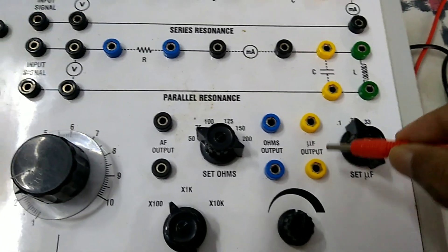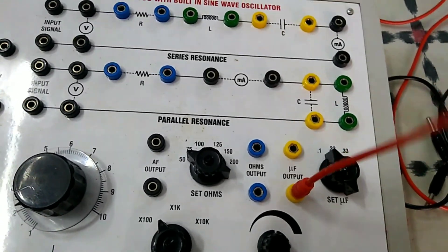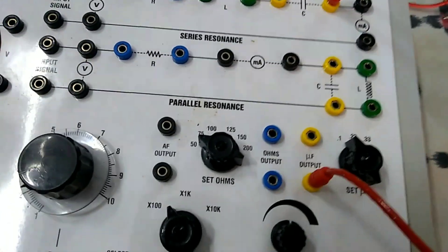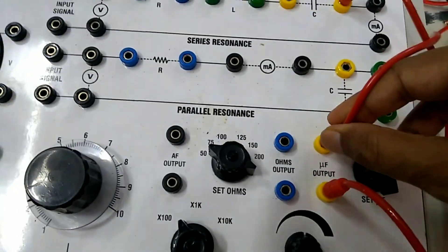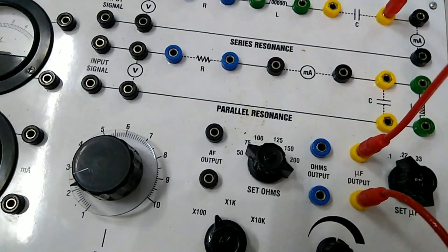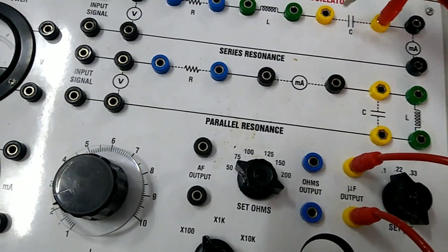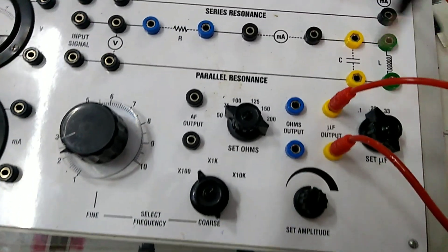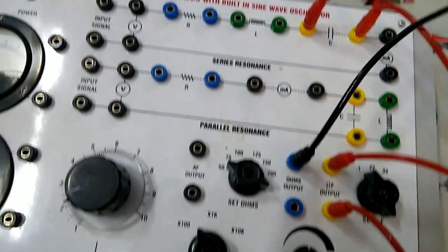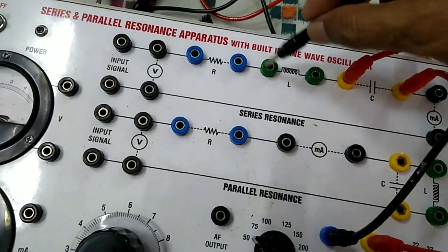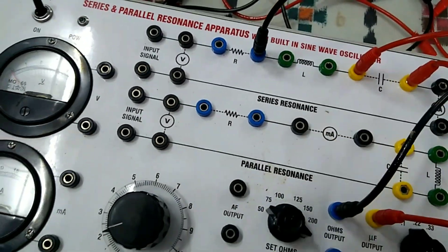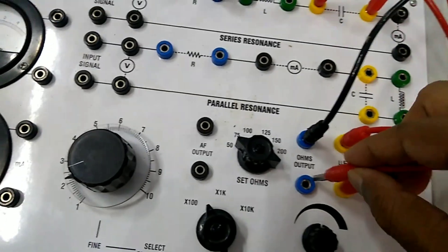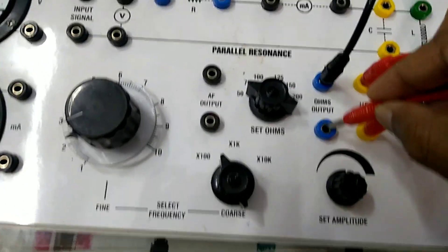Now let us see — I am connecting the capacitor. I have taken a capacitance of 0.1 microfarad and I am connecting the two terminals of the capacitor to the two points in the LCR circuit. These are the two terminals in the LCR circuit for the capacitor. Now I am connecting the resistor to the resistor circuit. I have taken 50 ohm resistance for the first experiment.